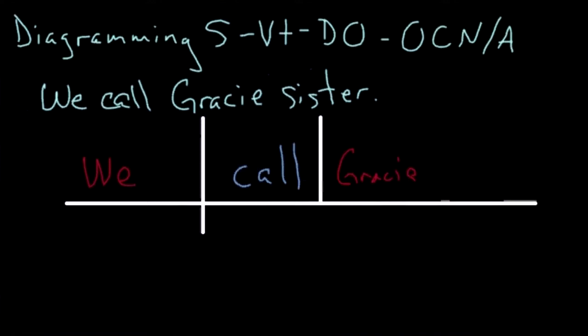So, after the direct object, we use a slanted left-leaning line. And after it, we place the object complement noun.